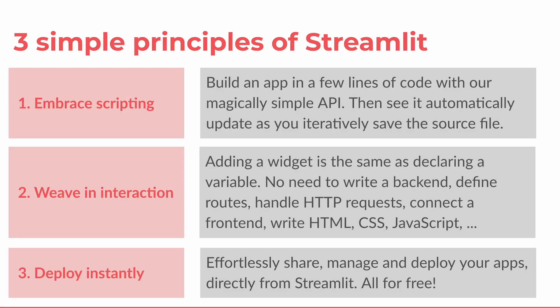Streamlit is based on three simple principles. The first is embrace scripting — you could build an app in only a few lines of code with Streamlit's magically simple API, and as you save the file, you can automatically see in real time how your application is evolving. The second principle is weave interaction — adding widgets is as simple as defining a variable. There's no need to write a backend, define routes, handle HTTP requests, connect a frontend, or write HTML, CSS, and JavaScript. All the heavy lifting is done by the Streamlit Python library.